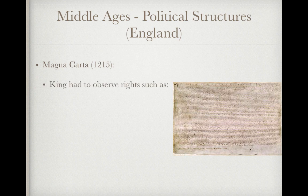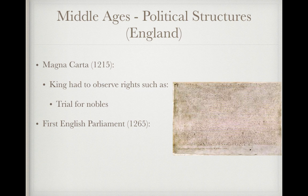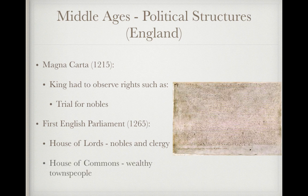In England, the Magna Carta of 1215 CE — star this — required the king to observe rights such as trial by jury for nobles, meaning the king could not imprison nobles without a trial. Then in 1265, the first English Parliament was established, with the House of Lords for nobles and clergy, and the House of Commons for wealthy townspeople. These are two early democratic institutions that influenced future governments, especially the United States.